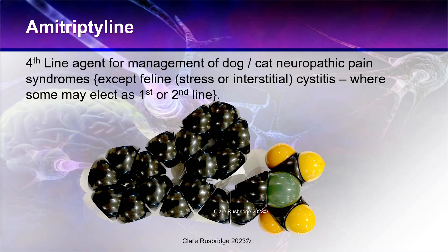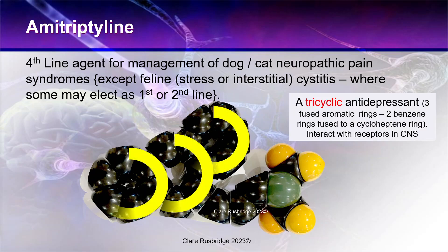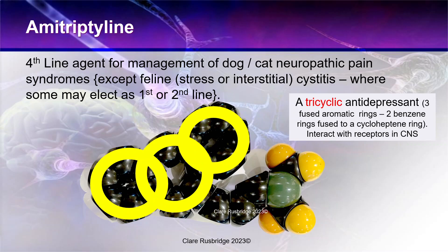Amitriptyline is a tricyclic antidepressant. That means it has three rings: two benzene rings fused to a central cycloheptene ring. It's this ring structure which confers a lot of its pharmacological action and effect on receptors in the central nervous system.